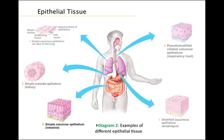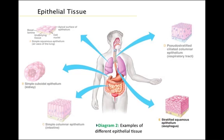Simple columnar epithelium lines the intestines; it secretes digestive juices and absorbs nutrients. Pseudostratified ciliated columnar epithelium forms a mucous membrane that lines the respiratory tract, trapping dust, pollen, and other particles in our air tubes. Stratified squamous epithelium contains many layers, making it suitable for lining surfaces subject to abrasion, such as the outer skin and the esophagus, which can be abraded by rough foods.